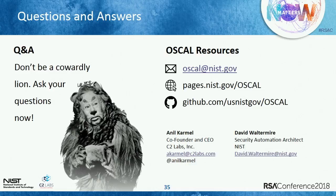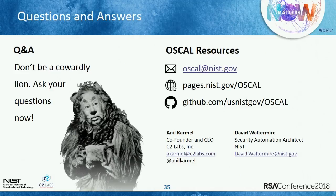Another audience member asks two quick things: first, whether OSCAL could down the road replace UCF with its open source mapping capabilities; second, how the NIST Cybersecurity Framework — the framework of frameworks — will be integrated. The presenter responds that they have plans for a framework layer that would capture mappings between control catalogs, between the CSF and control catalogs, and from various regulatory and policy frameworks. That is on their roadmap, and they're starting to prototype how to address those framework mappings right now, welcoming feedback on work already started.